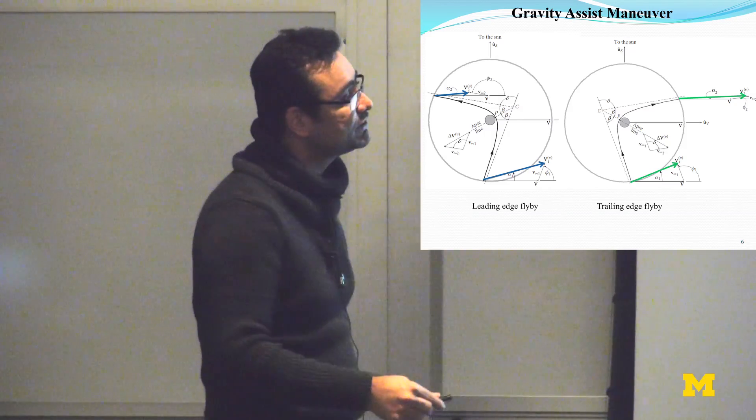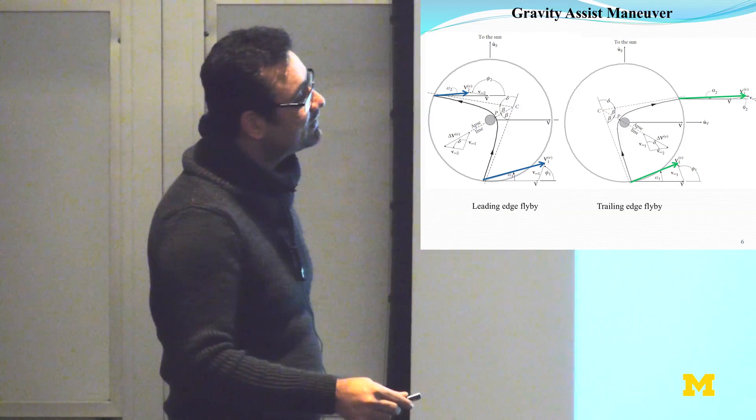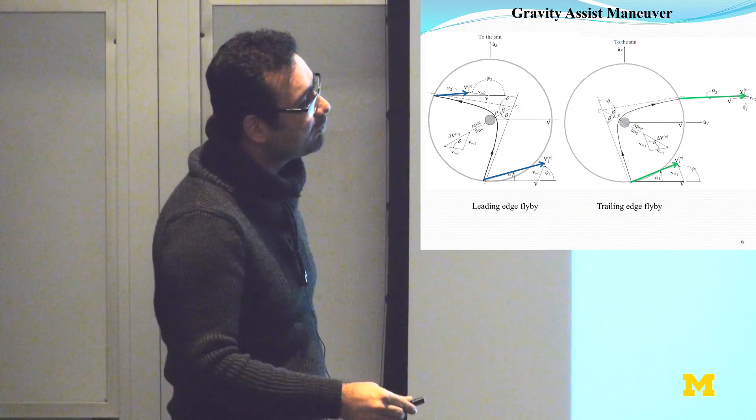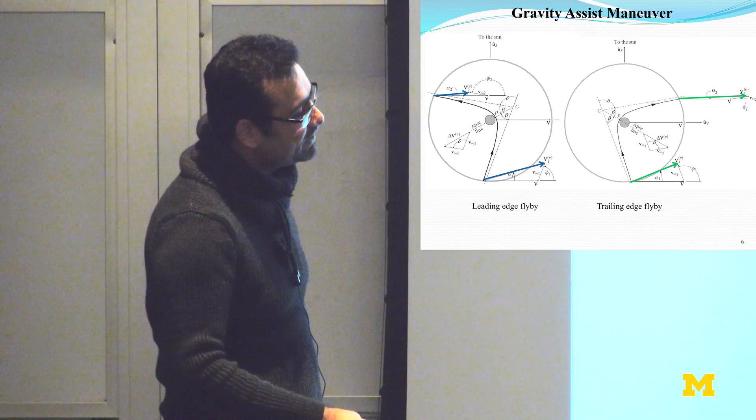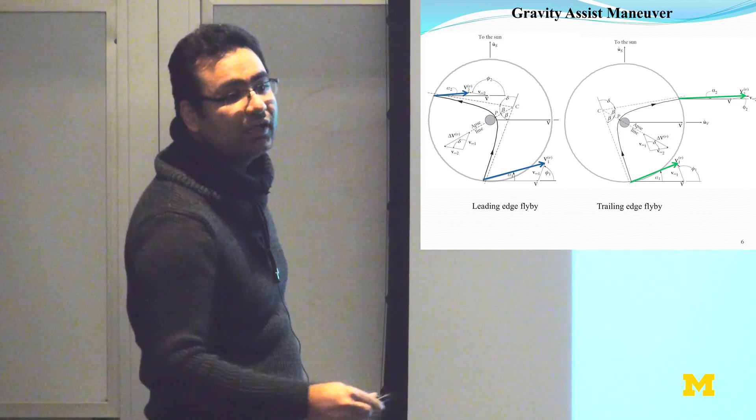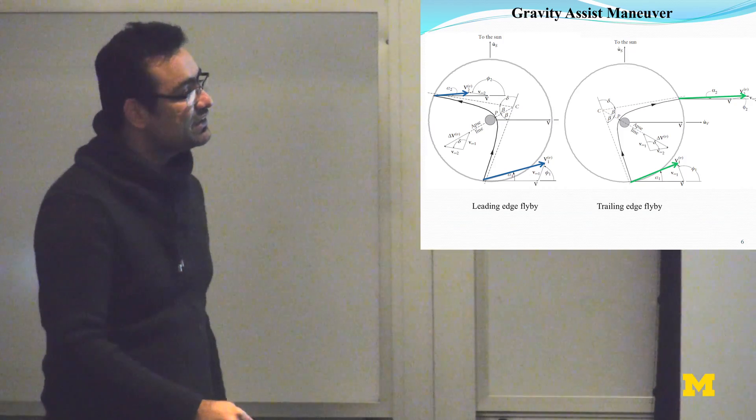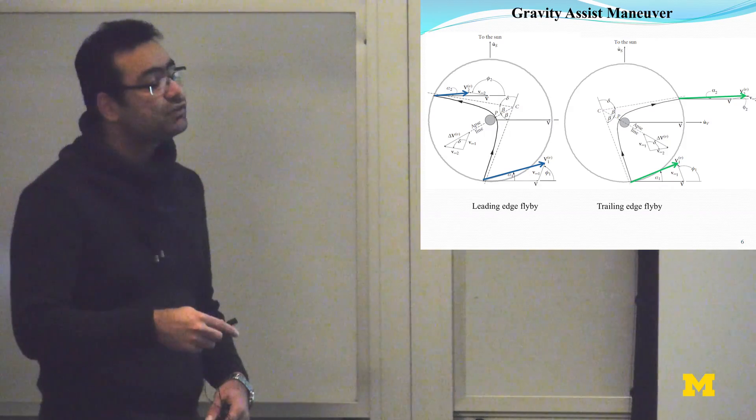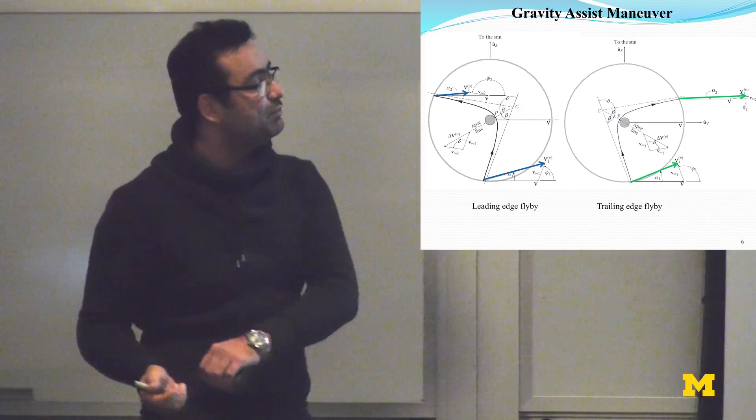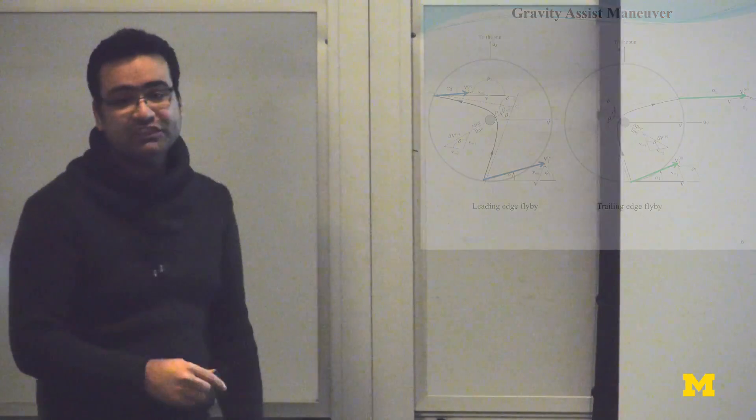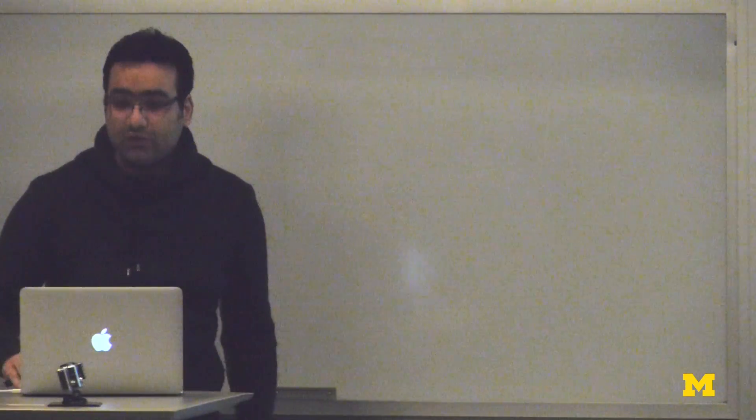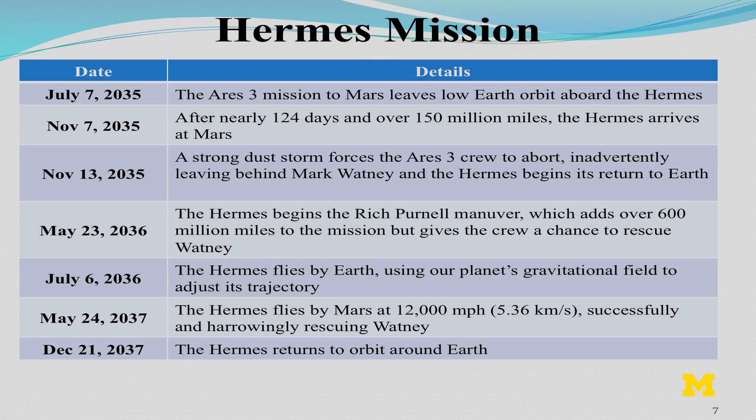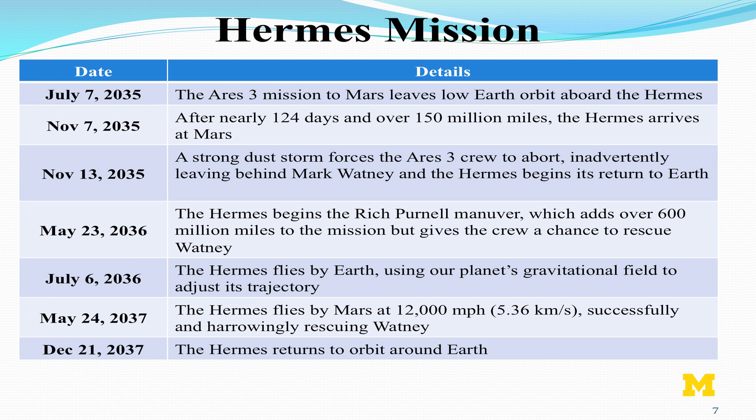On the other hand, if you have a trailing edge flyby, you will see that the component of the velocity of the central body is going to be added to the initial velocity, which makes the final total velocity bigger than the initial one. Whenever you have a trailing edge flyby, the central body is actually helping you and provides extra energy with which you can design efficiently your transfer. But the most important thing is that you have to come up with the correct timing and sequences in order to perform those maneuvers.